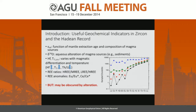There are several trace elements that vary systematically with magmatic compositional evolution and temperature — in particular, hafnium, titanium, and the ratio of thorium to uranium. Titanium forms a very nice crystallization thermometer in zircon. Rare-earth elements also provide some very useful information.